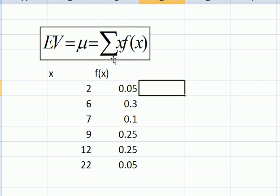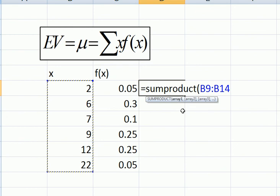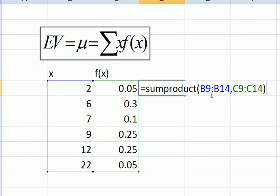We can do this in Excel by using SUMPRODUCT, and then put in the array. It's asking us for, first of all, the array on the left-hand side, the random variables, and then their probabilities. So the array here is b9 to b14, comma c9 to c14.